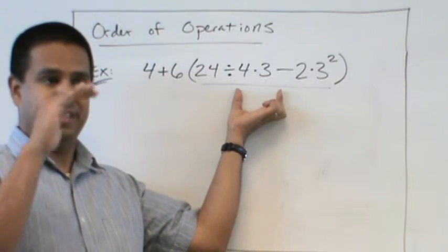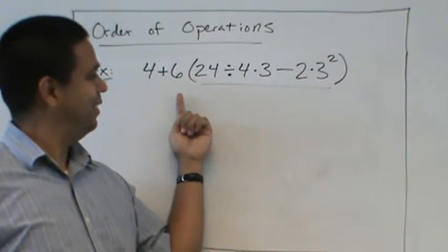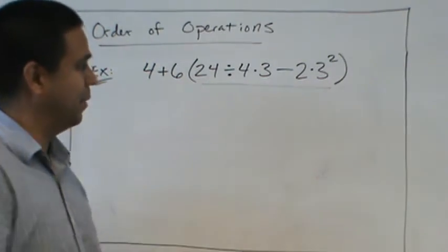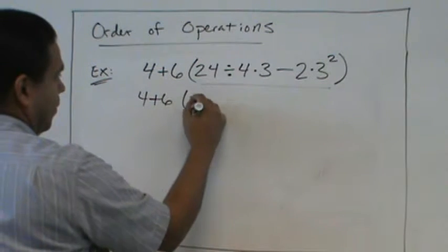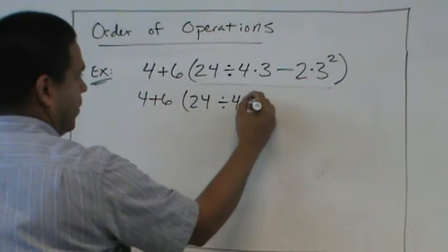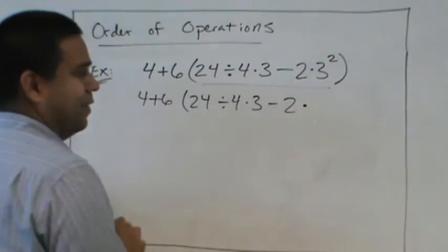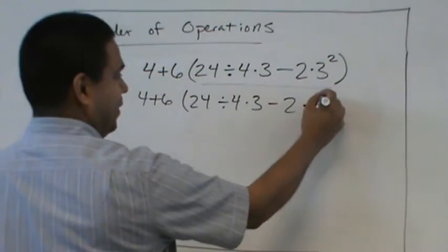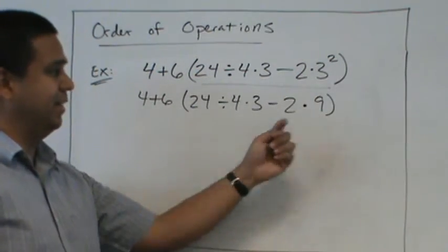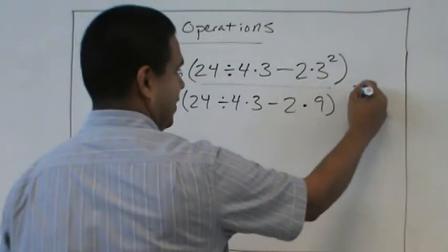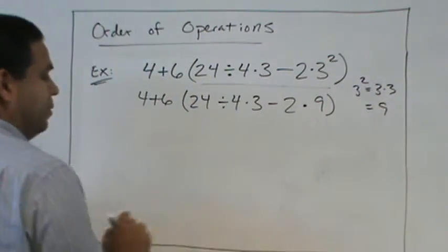Exponents. So we take care of this first. And what is 3 to the second power? 9. Very good. Not 6. 3 squared? 9. Because it's 3 times 3.